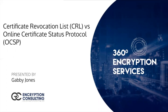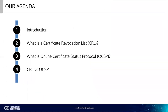Today we're going to be discussing an interesting concept in encryption, especially in Certificate Lifecycle Management — Certificate Revocation List, also known as CRL, versus Online Certificate Status Protocol, also called OCSP. First, we're going to go into understanding the basic concepts of both CRL and OCSP, and then we're going to go into the differences between the two.